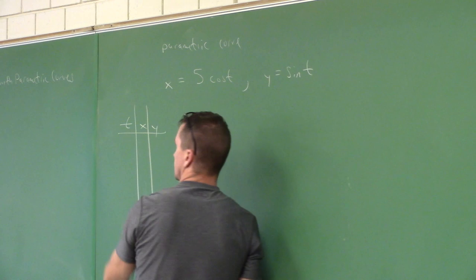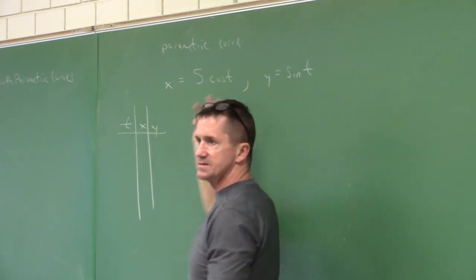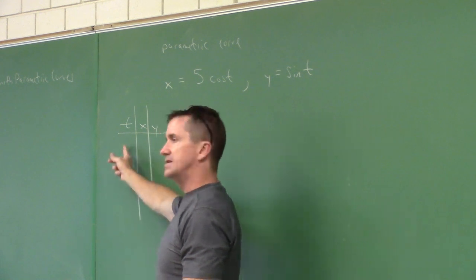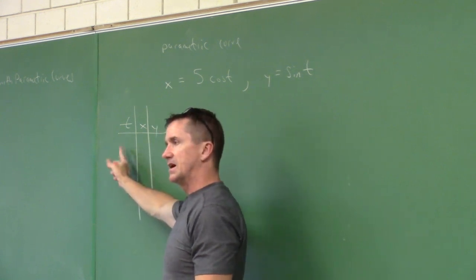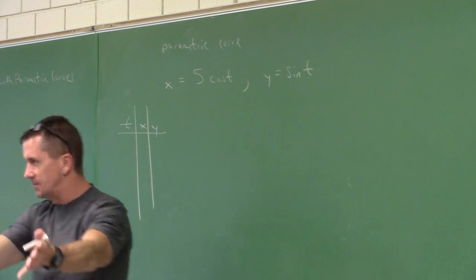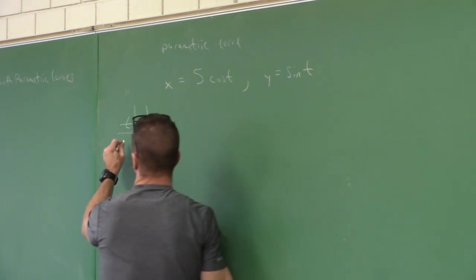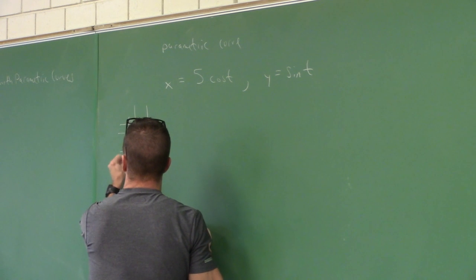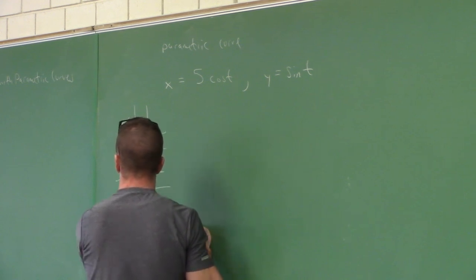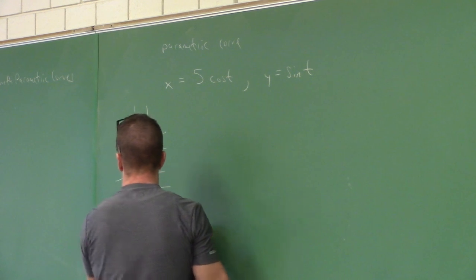Because of cosine and sine — the nature of these trig functions — for the t values we select, it would be good to use 0, pi over 2, pi, 3 pi over 2, and 2 pi. Let's see what happens with these xy coordinates and sketch the curve.